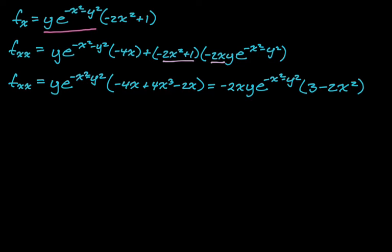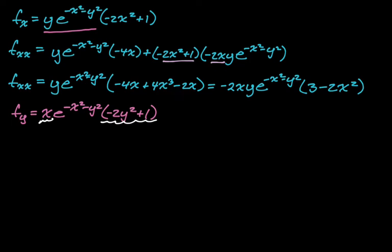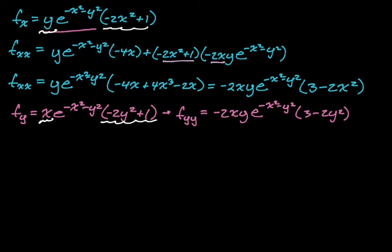Fortunately, we just have to plug into that, so it doesn't matter how ugly it is. For partial_yy, by symmetry, we take partial_xx and switch every x to a y. So partial_yy = −2xy·e^(−x²−y²)·(3−2y²). You don't have to use symmetry — you could just do the work again — but it saves a lot of time.